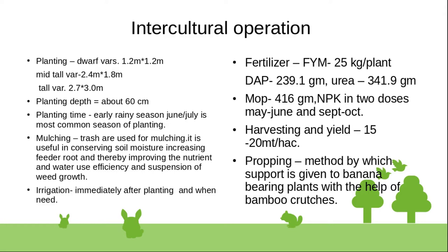Mulching is used to conserve soil moisture, increase feeder roots, and improve nutrient and water use efficiency. It also helps in suppression of weed growth. Trash materials are commonly used for mulching.